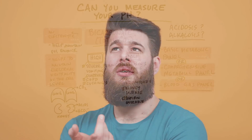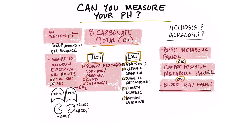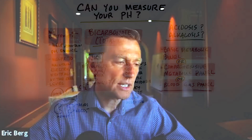What conditions might cause high bicarbonates? Well, if you have severe prolonged vomiting or diarrhea, because you're losing a lot of electrolytes. Also COPD — chronic obstructive pulmonary disease — or Cushing's syndrome, which is an adrenal problem where you have higher levels of cortisol. In these cases you'll see high levels of bicarbonate, indicating your body is too alkaline.